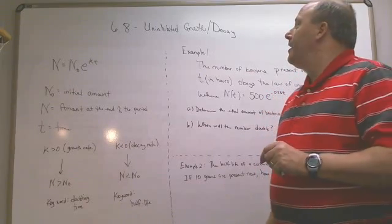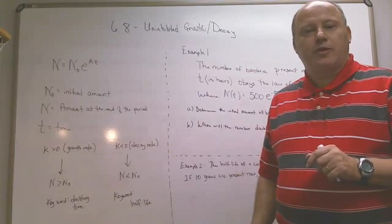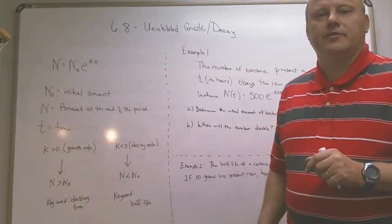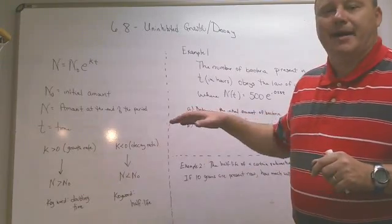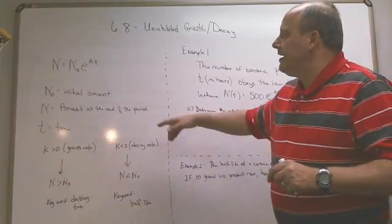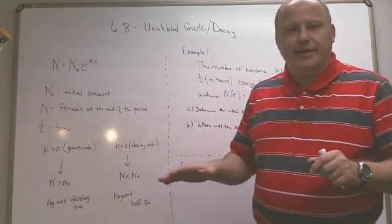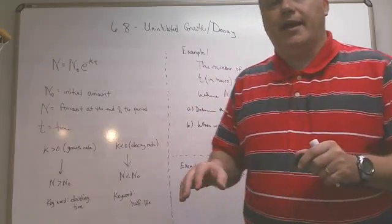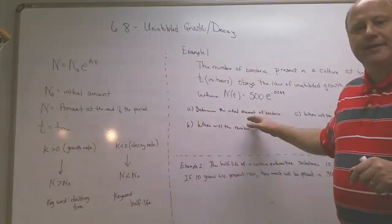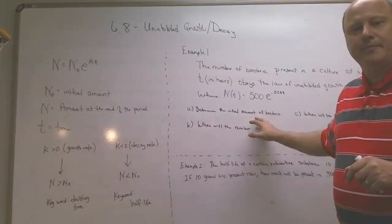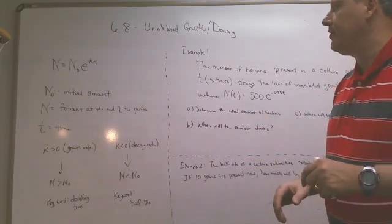Hi, this is 6.8, Uninhibited Growth and Decay, and this is actually the first part of 6.8. The second part will follow, but this one is basically bound using this formula right here. Before I get into this very far, you might want to go ahead and do a full screen on your window because when I hit this example in a minute, the words are kind of small. I had to go pretty small to get it on this little whiteboard here.